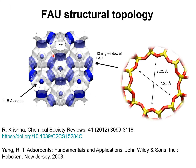Let's have a look at the structural topology of faujasite zeolites. These consist of cages of approximately 11.5 angstrom. Each cage is separated from adjacent cages by 12-ring windows that have apertures which are approximately 7.2 angstrom.